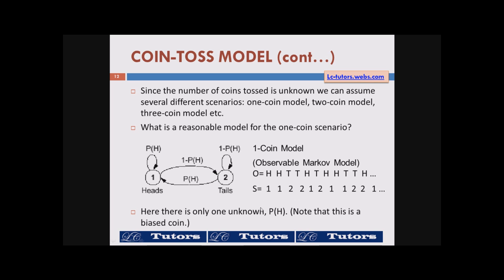In the one coin model there is only one unknown — the probability of the coin toss. It can be a biased coin, therefore P(head) is not equal to P(tail), and one minus P(head) is not one half.